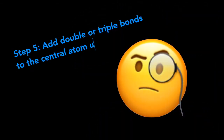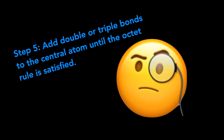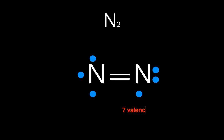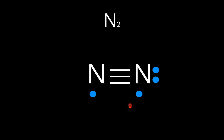So how do we draw the correct Lewis dot structure for N2? Step five: add double or triple bonds to the central atom until the octet rule is satisfied. Moving a pair of electrons to the middle and drawing one more line creates a double bond. Counting again, the nitrogen on the right has seven valence electrons and the nitrogen on the left also has seven — so we need to try again. Moving that pair of electrons to the middle creates a triple bond, giving nine on the right and seven on the left. Keep in mind, this is a process that may take multiple tries until you get the correct Lewis dot structure, so don't give up.